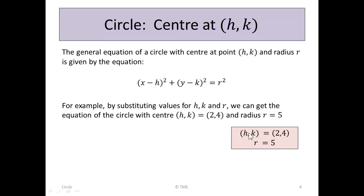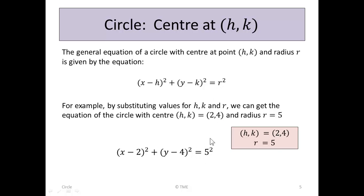Using those values — h, k is 2, 4 and r is 5 — and substituting in, we get x minus h, which is x minus 2 squared, plus y minus k, which gives us y minus 4, and the r becomes 5. So x minus 2 squared plus y minus 4 squared is 5 squared. This is the only circle with centre at 2, 4 and radius 5.